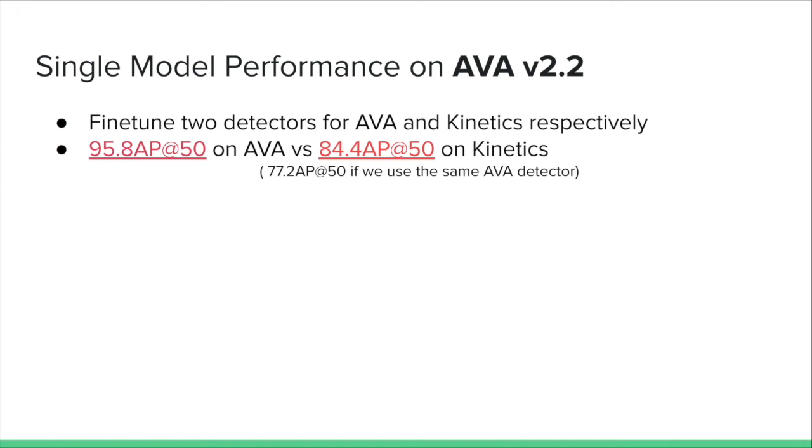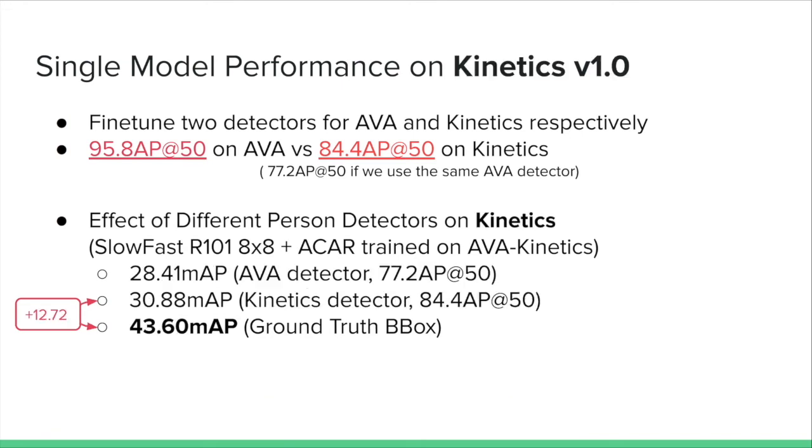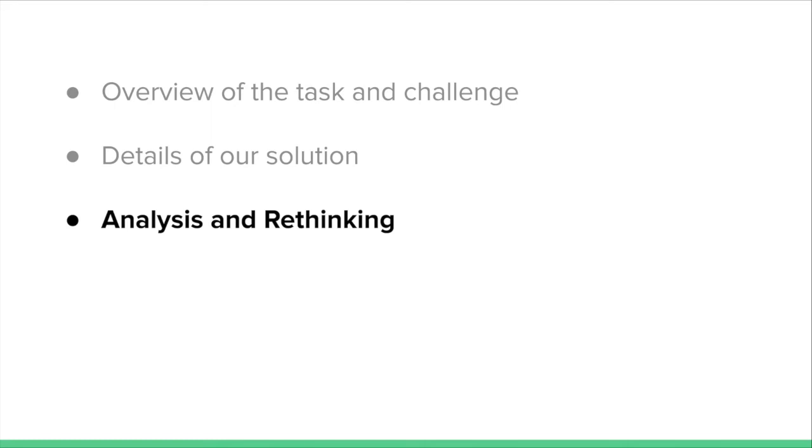We then study the effect of different person detectors. We fine-tune two person detectors for two parts of the dataset. Our AVA detector is slightly better than the one used in PySlowFast, which was last year's winning solution. However, despite the fact that our detector reaches nearly 96 average precision on AVA validation set, the gap between our detections and ground-truth bounding boxes is still large. The reason for this 8 MAP gap is still unclear. We also find that person detection on Kinetics is even harder than AVA. Even though we fine-tune the detector for Kinetics separately, the person detection average precision, which is 84.4, is still much lower than that of AVA. Now, let us move on to the final section of our presentation, analysis and rethinking.